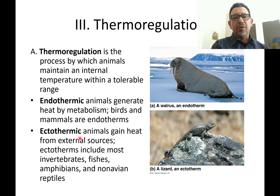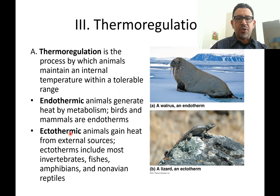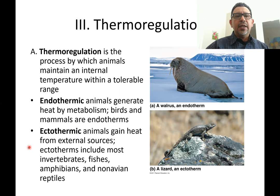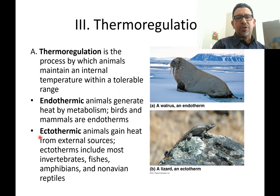Ectothermic animals are those that use an external source. Ecto means outside, and thermic again refers to temperature — specifically, heat — the source of heat that allows them to maintain a steady state with regards to temperature. When you look at the animal kingdom, you'll find that most animals are ectothermic.